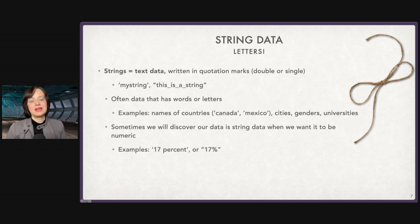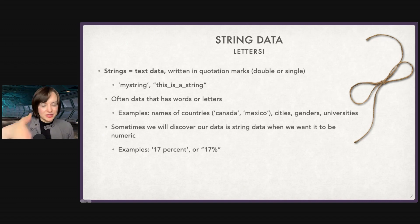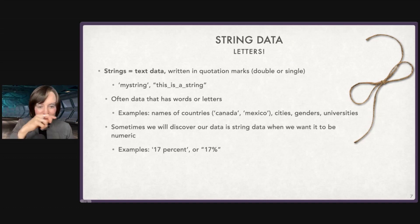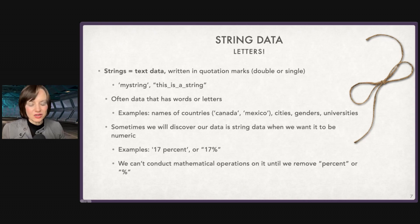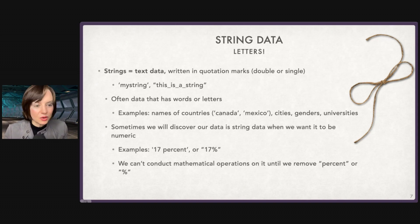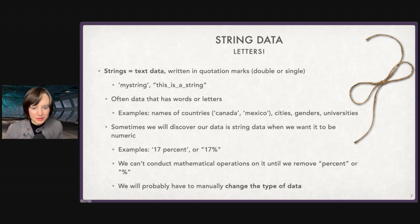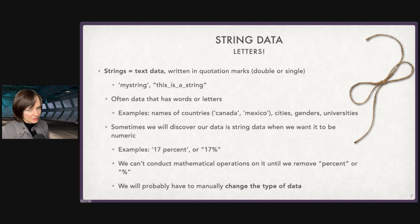Another common way this shows up is if you have data that includes symbols or words. So if you have data on percentages — 17%, 18% — marked with the percent sign, Python is going to automatically read that as a string. You want that as a number to use it in math and statistical operations, so you'll need to manually go in, remove the percentage mark, and then convert it to an int or whatever. Probably the biggest interaction with data types in your early days as a data scientist is going to be changing them because they're wrong.